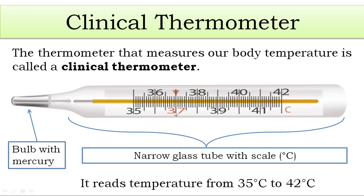On this long narrow glass tube there are scales. If you look properly, the scale ranges from 35 to 42 degrees Celsius. So the clinical thermometer reads temperature from 35 to 42 degrees Celsius.